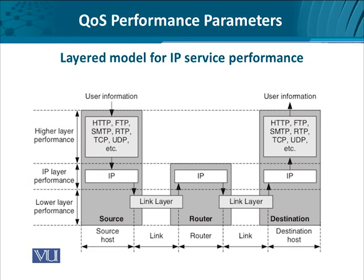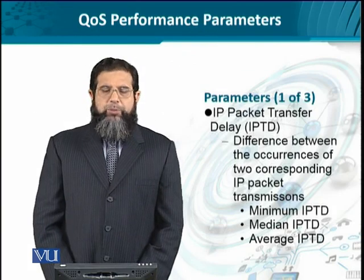Looking at this diagram, we have an all-IP environment with an end-to-end scenario where we have the service provider and the service seeker in a source-destination situation. At the higher layer, there are many protocols which use IP and affect its behavior. Likewise, the data link layer protocols also determine how this IP packet, which is an hourglass model, is affected in terms of service provisioning.